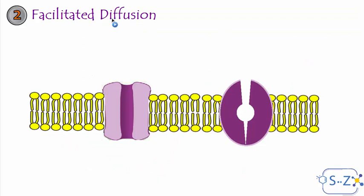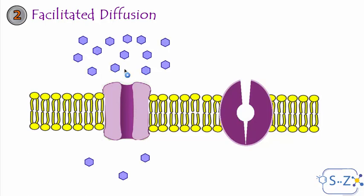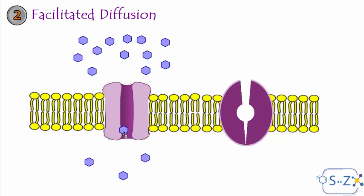The second type of passive transport is facilitated diffusion. As the name suggests, it's a diffusion but facilitated — helped — by certain proteins called channels, such as a protein channel or a carrier protein. Although these are channels, they do not require energy because molecules are still moving from high concentration to low concentration. However, they need these channels because they are large in size. For example, glucose is large and can't fit through the plasma membrane, so it needs a channel. When the cell needs glucose to produce energy, the glucose molecules diffuse from outside — the high concentration medium — to inside through this protein channel.